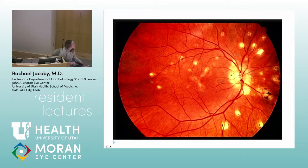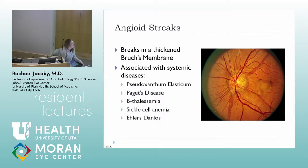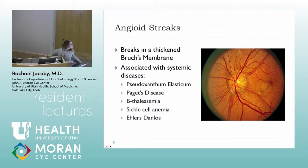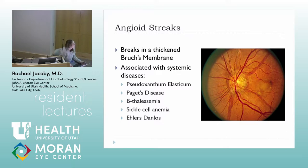Another interesting condition that can cause CNVMs is angioid streaks. With angioid streaks you get this thickened, calcified Bruch's membrane and then breaks throughout that membrane. It emanates off the optic nerve and can really look like blood vessels. This is a pretty glaring case, but sometimes it's much more subtle and can be hard to pick up clinically.